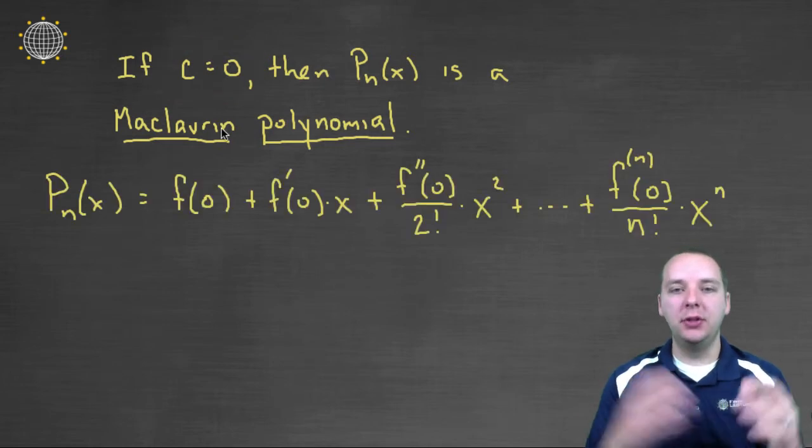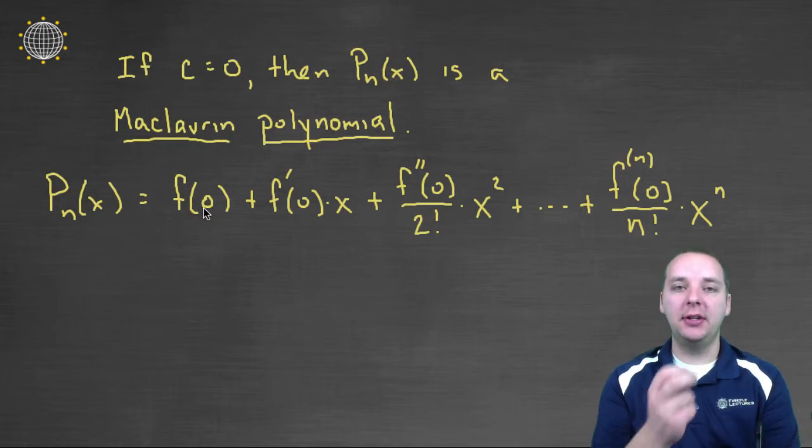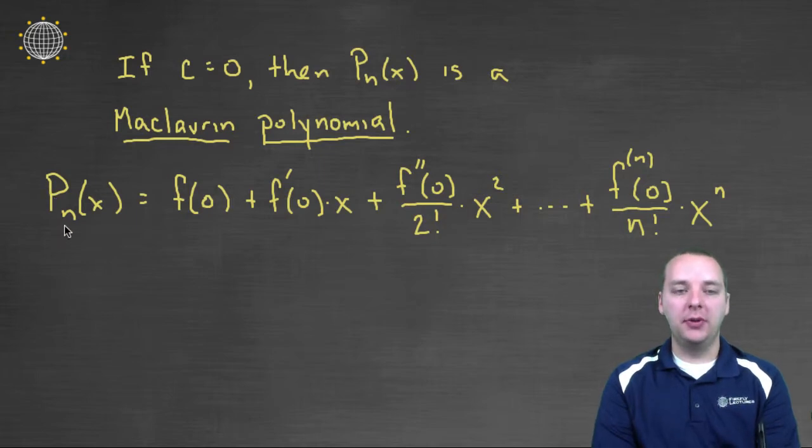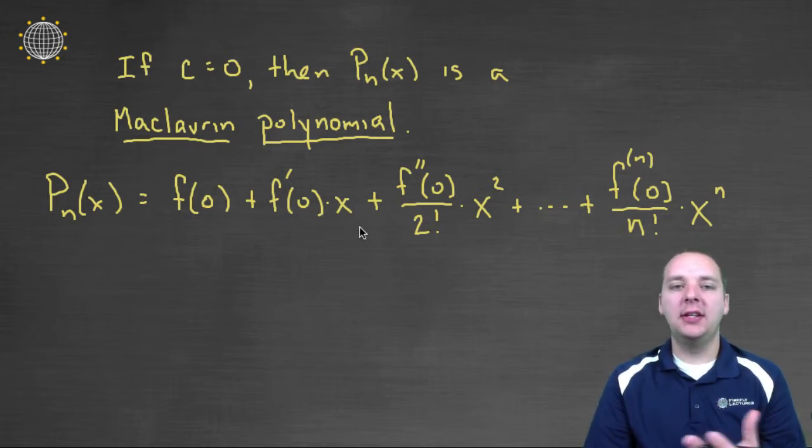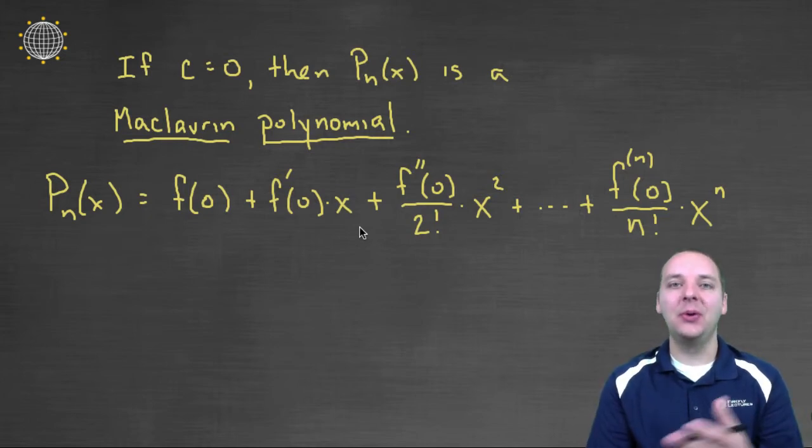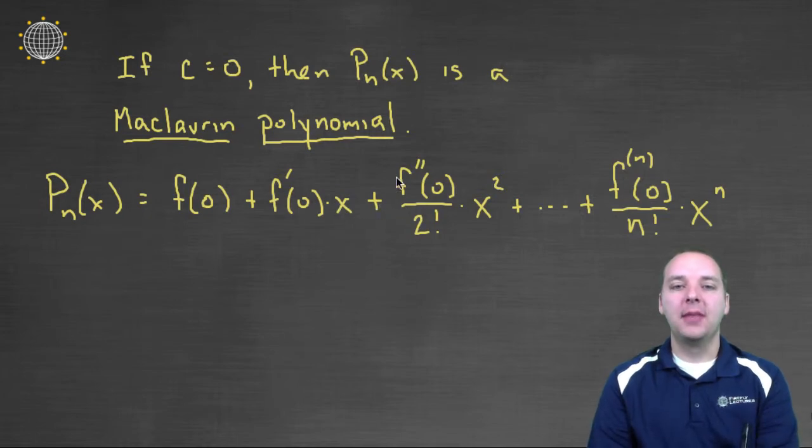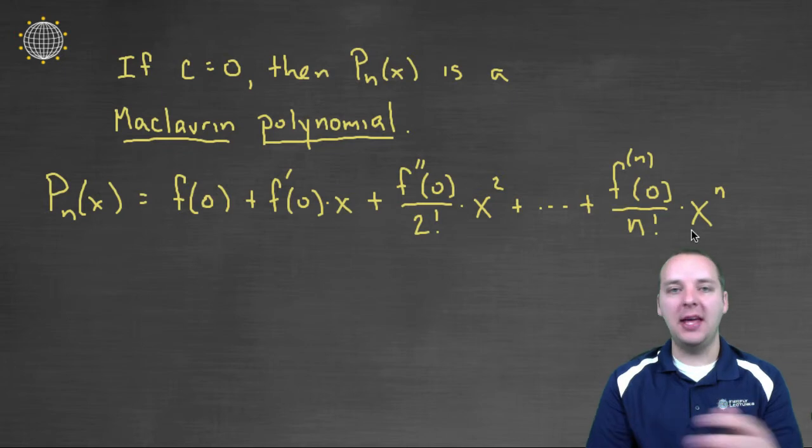Here's what this reduced definition will look like. If c equals 0, check out what this would reduce to. The polynomial of degree n of x would be f of 0 plus f prime at 0 times x. Why just x? Why isn't it x minus c anymore? Well, it actually is. It's x minus 0, which simplifies to just an x. f double prime at 0 over 2 factorial times x squared. Man, that looks a lot nicer. Plus, on and on you go, the nth derivative of f at 0 divided by n factorial times just an x to the n. So much simpler looking if it's centered at 0.